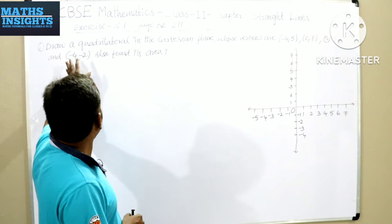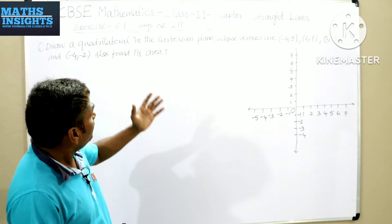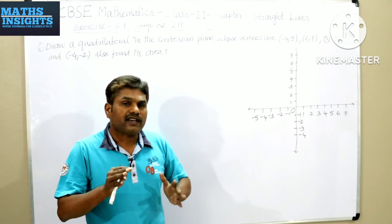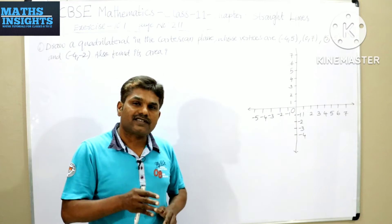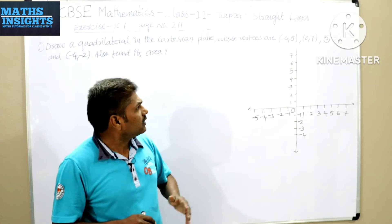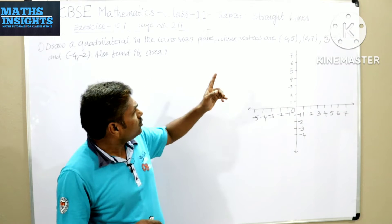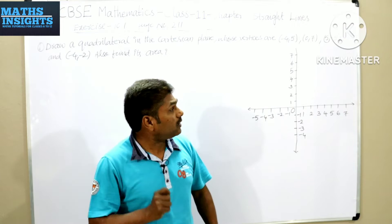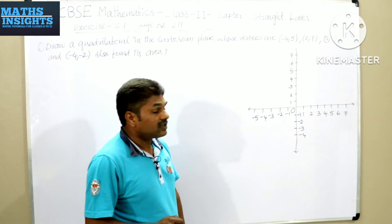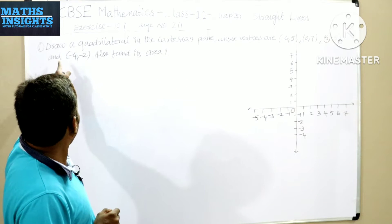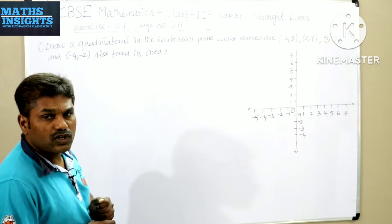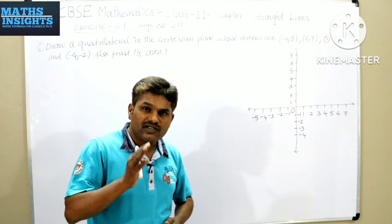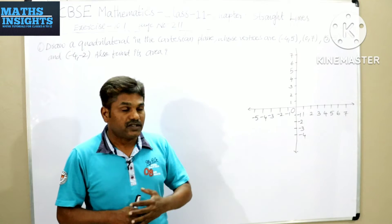What does the problem say? Draw a quadrilateral in the Cartesian plane, meaning on a plane with x-axis and y-axis. You have to use these vertices: minus 4 comma 5, 0 comma 7, 5 comma minus 5, and minus 4 comma minus 2. Also find its area — that is very important.